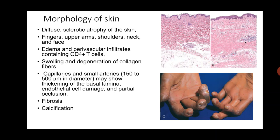A biopsy of the skin shows that, comparing normal skin on the left with scleroderma on the right, the dermal collagen is markedly increased and the epidermis appears more atrophic, showing diffuse sclerosis and atrophy. The fingers, upper arm, shoulder, neck and face are mostly involved. There is perivascular infiltrate of CD4 positive T cells, swelling and degeneration of collagen fibers, and further replacement by fibrosis and calcification.